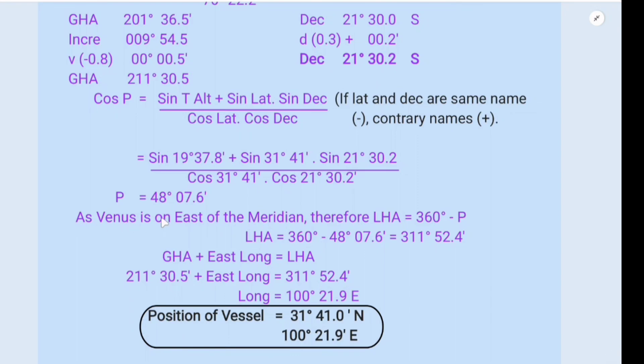As Venus is on east of the meridian, therefore LHA is equal to 360 degrees minus P. So LHA is equal to 360 degrees minus P, that is 48 degrees 07.6 minutes, is equal to 311 degrees 52.4 minutes.